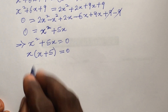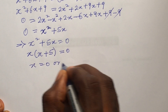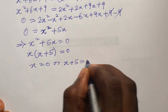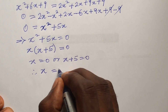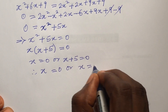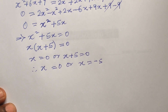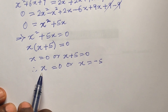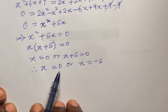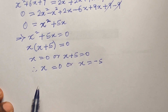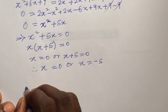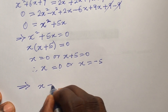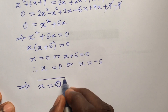Applying the zero product rule: x equals 0 or x plus 5 equals 0. Therefore x equals 0 or x equals negative 5. Now if we plug both values back into our original equation, the first one is correct and the second one will be rejected.